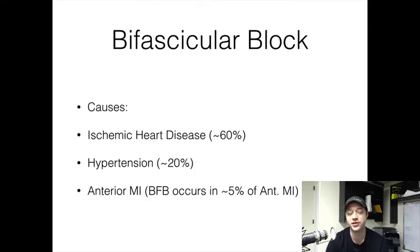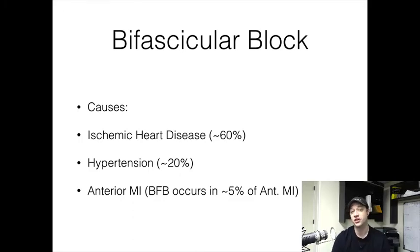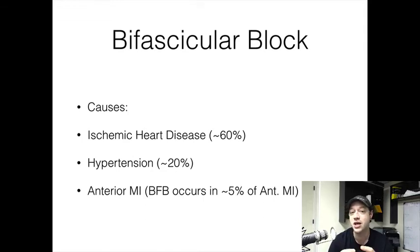Looking at the causes of a bifascicular block: about 60% of people who have bifascicular blocks are going to be suffering from some type of ischemic heart disease. This could be someone who just has a significant amount of plaque buildup in their coronary arteries or someone who has a congenital defect that we just haven't picked up yet. About 20% of these patients are going to be experiencing hypertension — not necessarily a hypertensive emergency, but patients with chronic hypertension, generally controlled by a beta blocker.